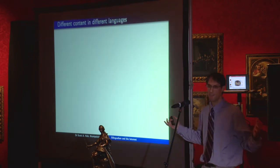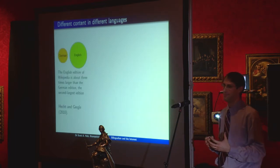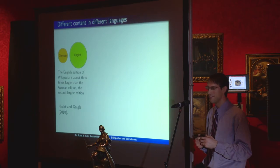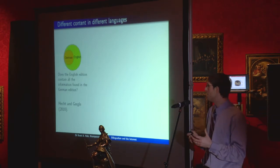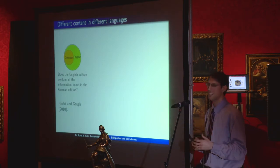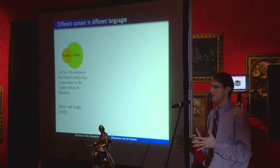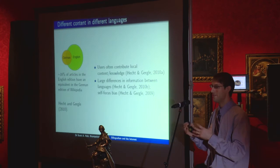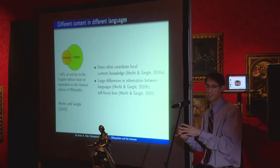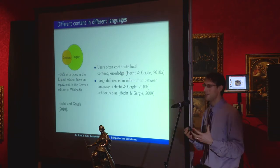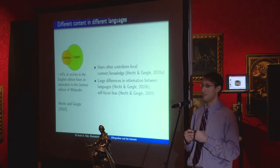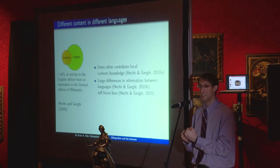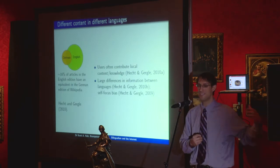This is mirrored from platform to platform. Take Wikipedia as an example: the English edition is the largest, about three times the size of German, which by some accounts is the second largest. You might think English just has everything German has and more — but no, actually about half the articles in the German edition have no equivalent in the English edition. People often contribute local content and their own local knowledge, so if you read about a place in a language not commonly spoken there, you're likely reading things third-hand, referencing sources and content not written by locals.